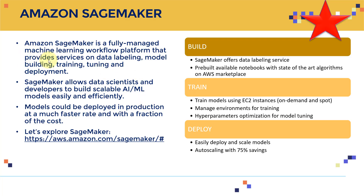Amazon SageMaker is a fully managed machine learning workflow platform that provides services for data labeling. For supervised training, we have to collect and label data, and data labeling in practice is a very time-consuming and costly job.